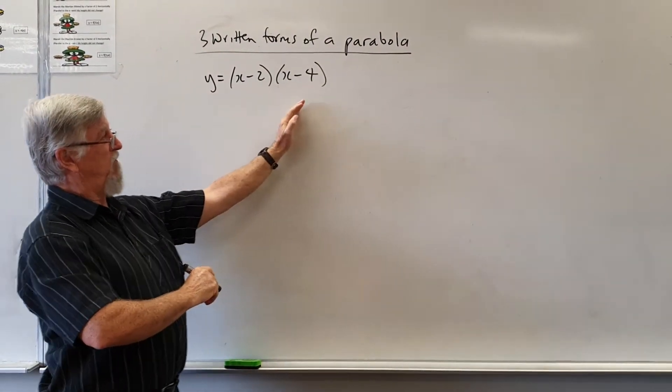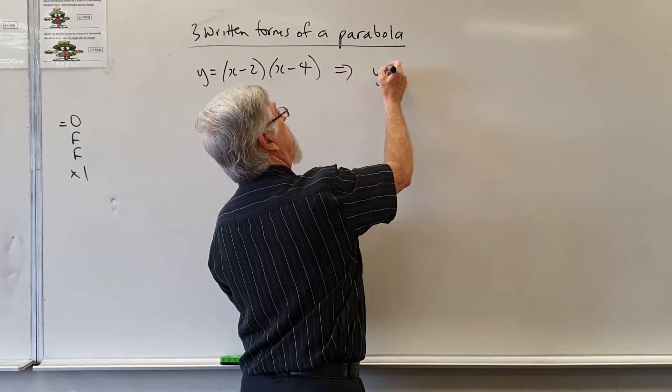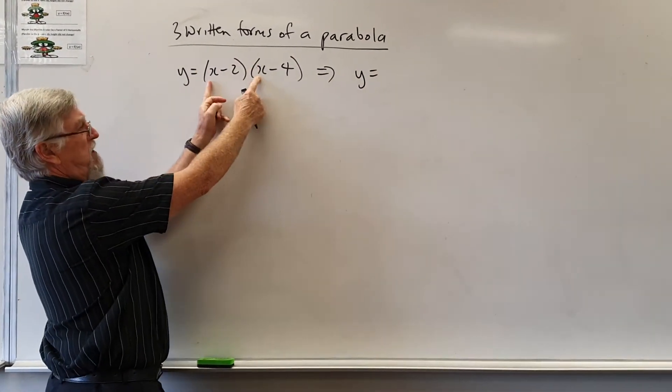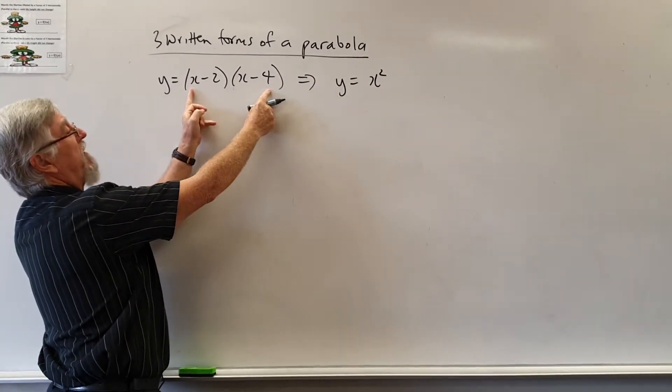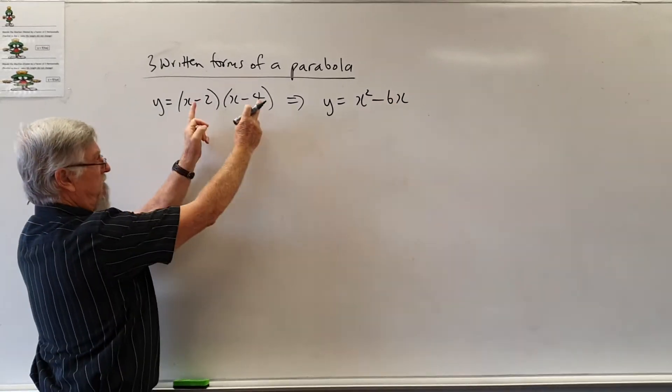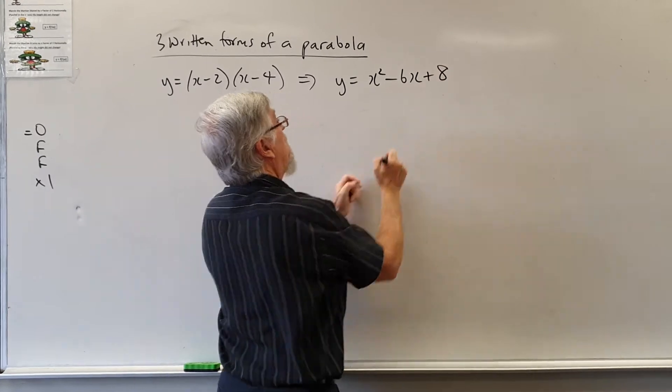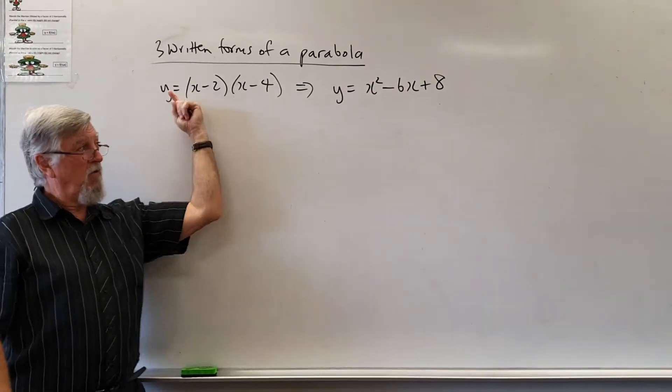The silly thing about this form, it's actually the same as writing if I expanded the brackets. I have x squared, I have minus 4x and minus 2x is minus 6x, and I have minus 2 by minus 4 which is plus 8. So really this is just one of those.